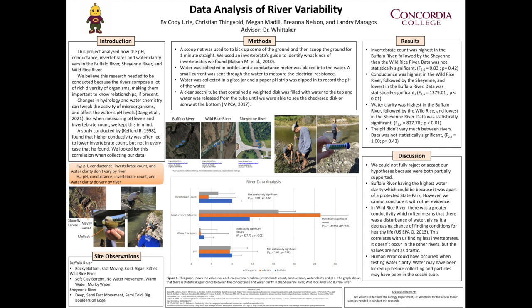We had two hypotheses that we were testing. Our null hypothesis was that the pH, conductance, invertebrate count, and water clarity do not vary by river. Our alternative hypothesis is that the pH, conductance, invertebrate count, and water clarity do vary by river.